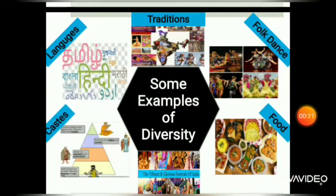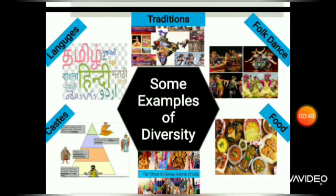The caste system includes Shudras, Vaishyas, Kshatriyas, and Brahmins at the top. Brahmins were the educated people. Kshatriyas were warriors who protected their subjects and their kingdom. Vaishyas were like farmers and others who worked for the king. Shudras were at the very bottom — the untouchables. That is the caste system.